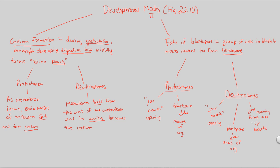That's how we name and classify protostomes and deuterostomes. We have three developmental modes to grasp: cleavage patterns, coelom formation, and the fate of the blastopore. All of these are defining characteristics of many different animals that can be subdivided into protostomes and deuterostomes.